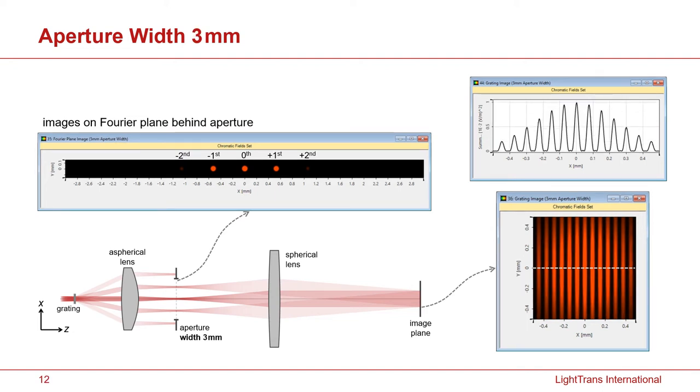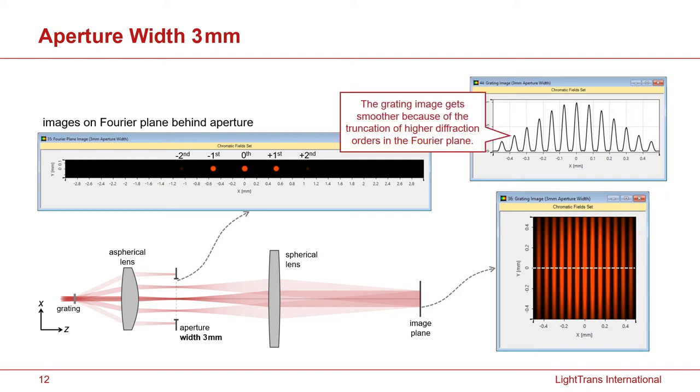Now, I reduce the width of the aperture. So previously it was 5mm, now it's only 3mm. And it only allows from the minus second to the plus second, in total 5 diffraction orders, to go through the system. And here you can see the image obviously becomes smoother. You do not see this high resolved edge of this grating anymore. That is because of the loss of the spatial frequencies.